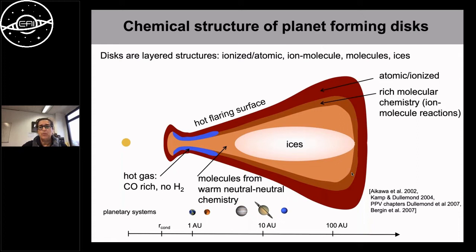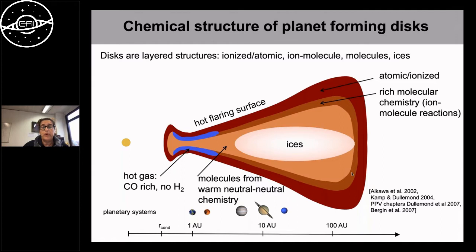On the left is the star, and we go out to larger distances, with the solar system shown at the bottom for comparison — rocky planets in the inner part, gas and ice giants further out. We now understand there is a radial temperature gradient: very hot close to the star, extremely cold beyond 10 AU. At a certain point the temperature drops enough to form water ice, and further out CO₂ and CO ice.